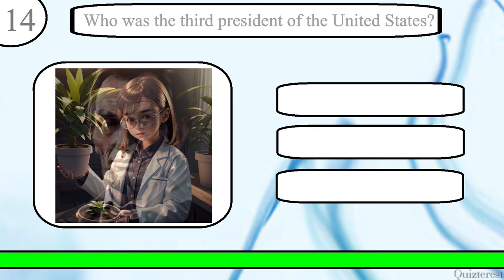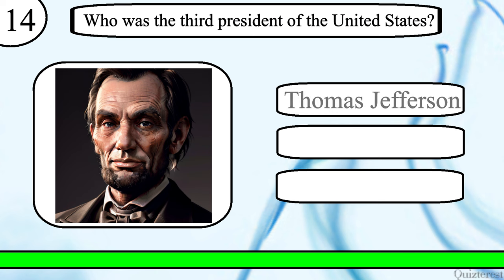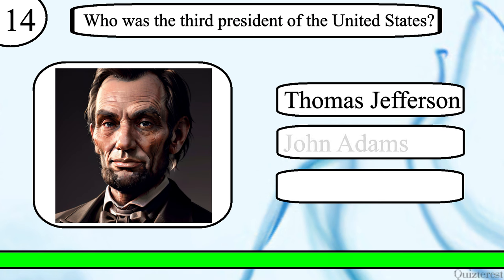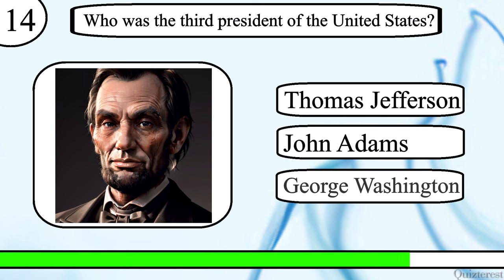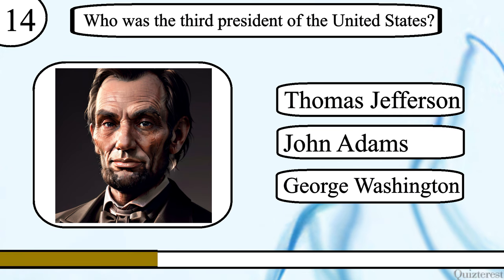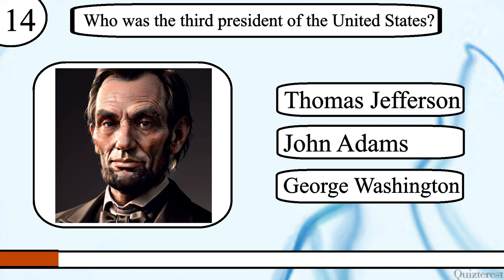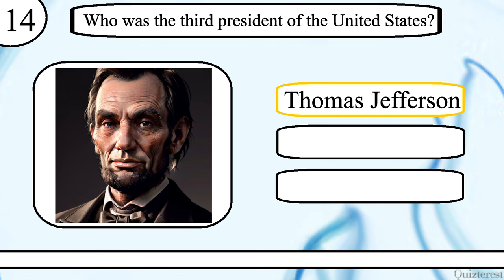Question 14. Who was the third president of the United States? Thomas Jefferson, John Adams, or George Washington? The correct answer is Thomas Jefferson.